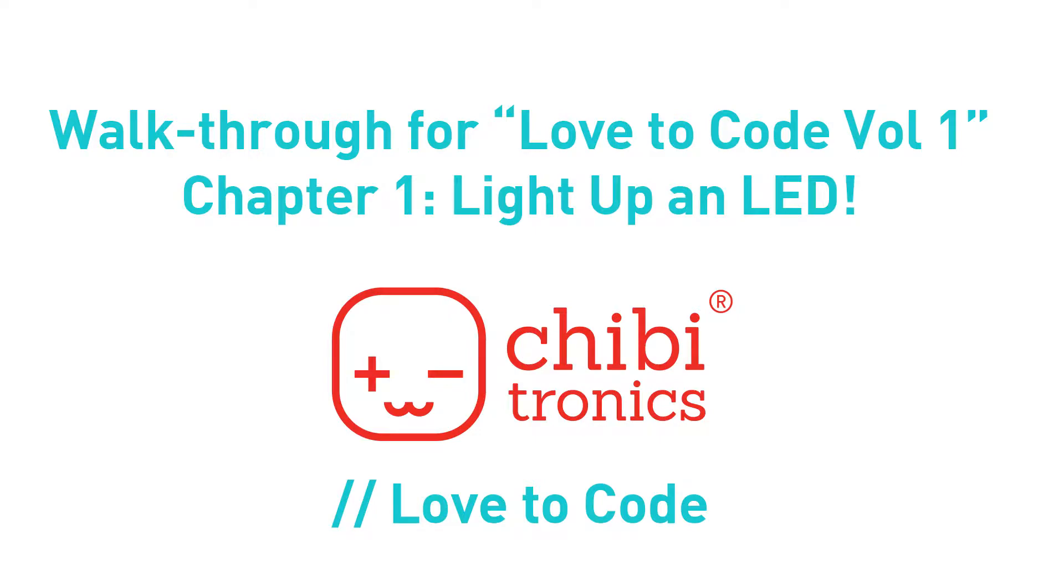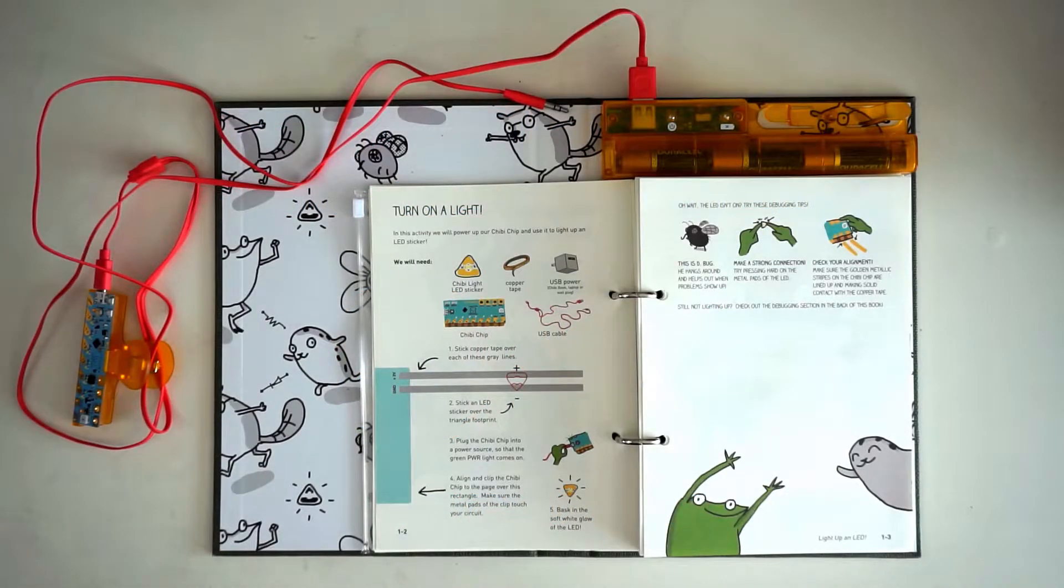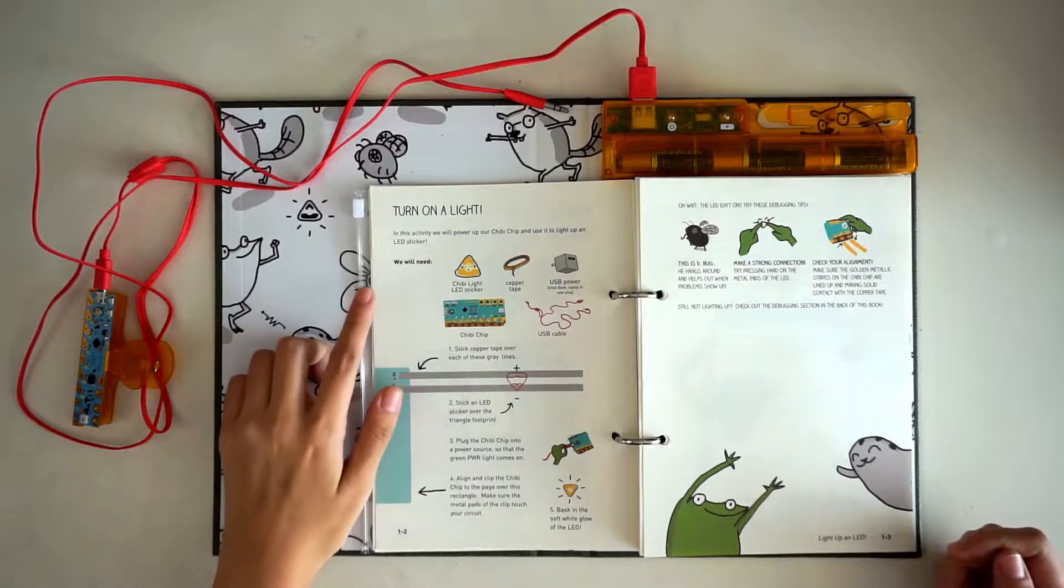Hi! Welcome to the walkthrough for Chapter 1, Light Up an LED. Open your chibi book to page 1-2. The exercise is called, Turn on a light.